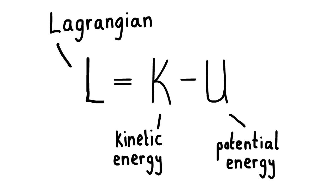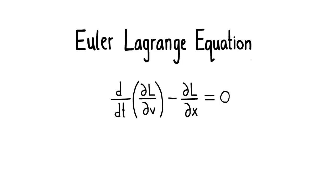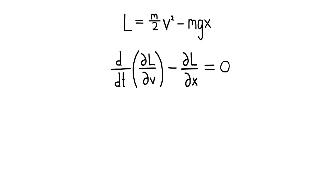For example, for a particle falling under the influence of gravity, we have the Lagrangian m half v squared minus mgx. The way we describe the motion of our system in Lagrangian mechanics is by subbing our Lagrangian into an equation called the Euler-Lagrange equation. To make sense of this, let's use the Lagrangian we looked at earlier and break it down term by term.